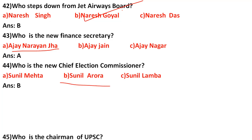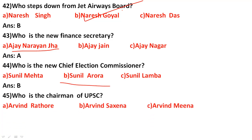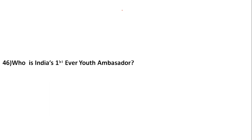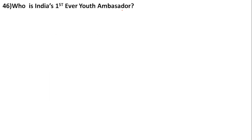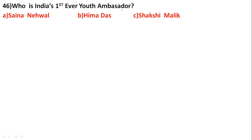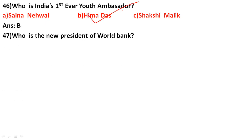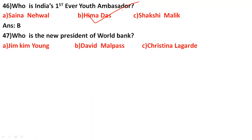Who is the new Chief Election Commissioner? The options are Sunil Mehta, Sunil Arora, and Sunil Lamba. The correct answer is Sunil Arora. Who is the new Chairman of UPSC? The options are Arvind Rathore, Arvind Saxena, and Arvind Meena. The correct answer is option B: Arvind Saxena. Who is India's first Youth Ambassador? The correct answer is option B: Hima Das. Who is the new President of the World Bank? The correct answer is option B: David Malpass.